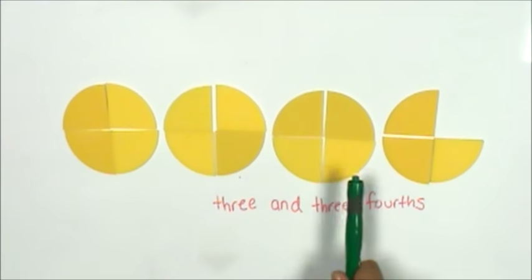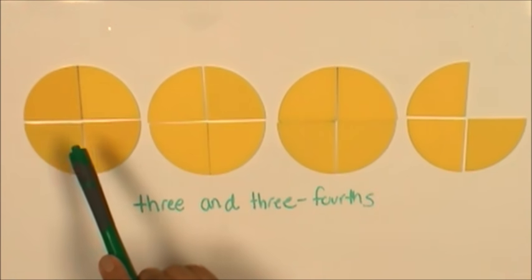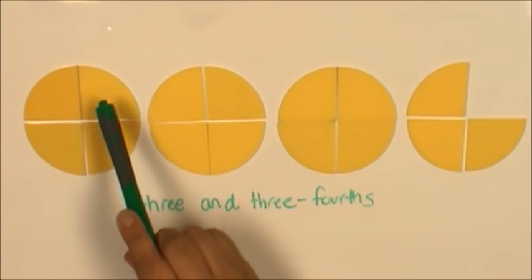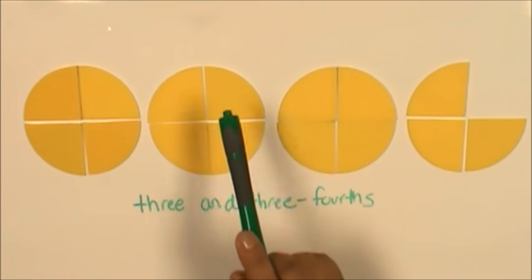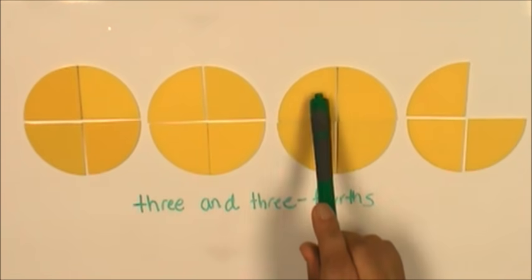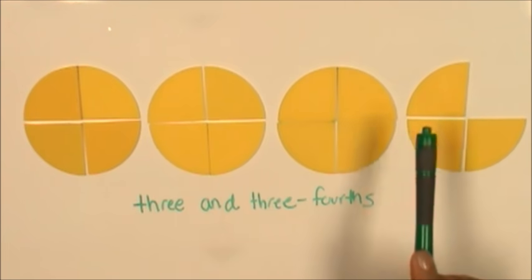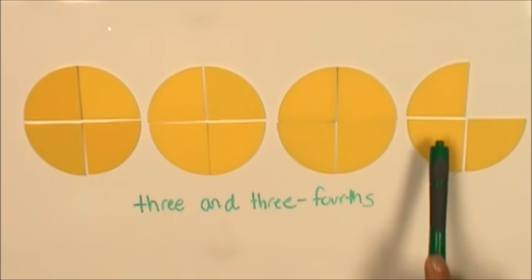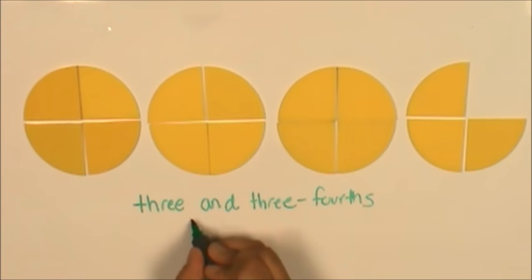Each circle has been partitioned into four fourths. Now one fourth, two fourths, three fourths, four fourths, five fourths, six fourths, seven fourths, eight fourths, nine fourths, ten fourths, eleven fourths, twelve fourths, thirteen fourths, fourteen fourths, fifteen fourths. So we can also describe this model as fifteen fourths.